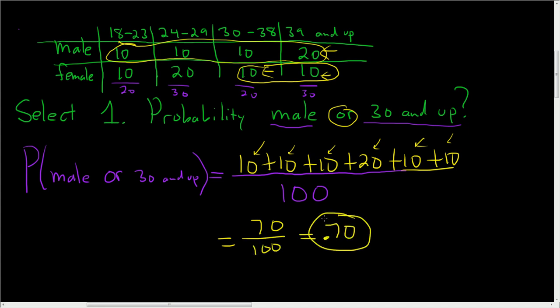To recap: whenever you have a table, all you do is circle the males, circle the people that are 30 and up, add it all up, and that goes in the numerator. On the bottom, you just use the total.